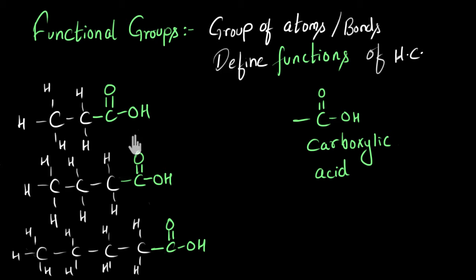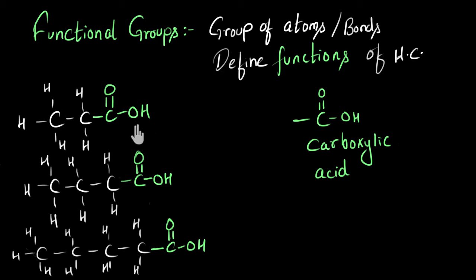The only thing common is this group of atoms. So the common acidic function is happening because of this group of atoms. Whenever this group of atoms attaches to any hydrocarbon, it makes it have acidic functions — it defines the function of the hydrocarbon. Therefore, we call this group of atoms a functional group. Now let's look at some other functional groups and their awesome functions.